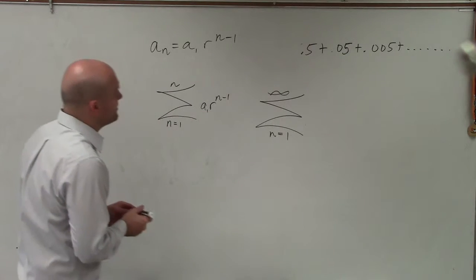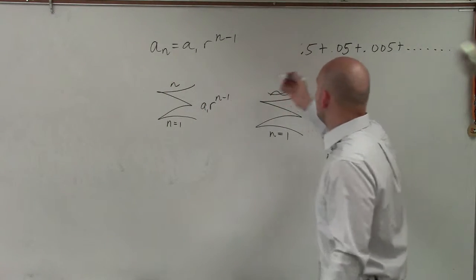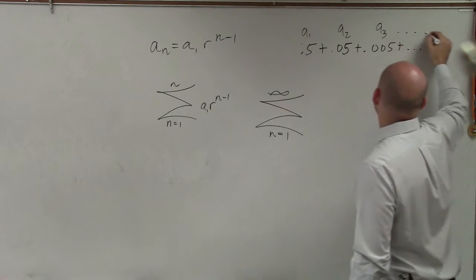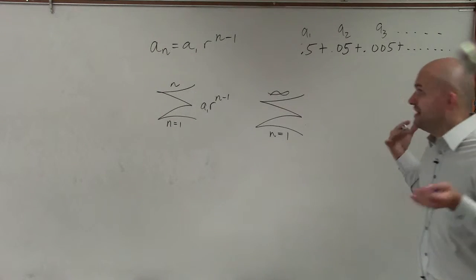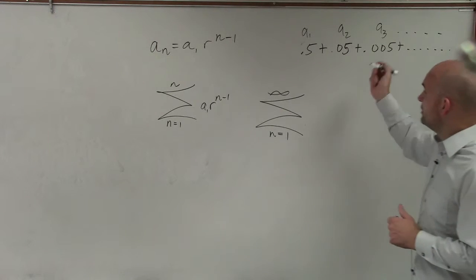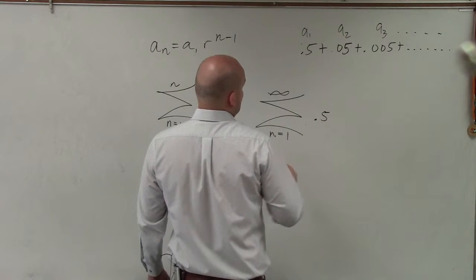All right, so now we need to determine what exactly is the rule. We need to determine a₁. Well, we know a₁, that's cool. We know a₂, we know a₃, but we'd have to continue on and on forever to find the rest of the terms, so that's going to be kind of difficult. But we know a₁, and that's really the most important thing. a₁ is 0.5.